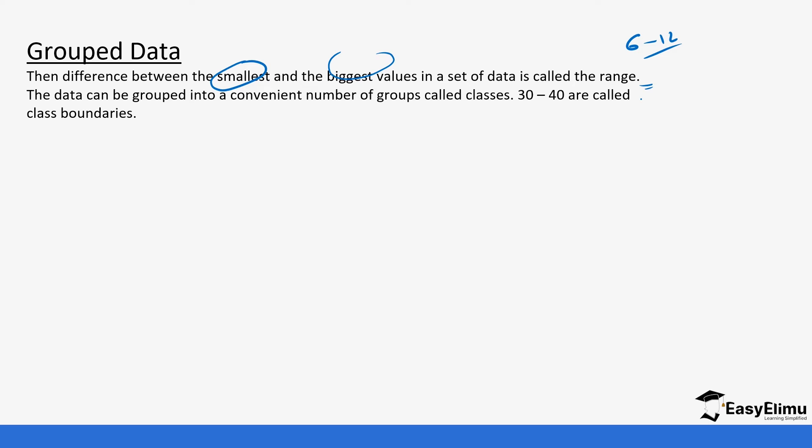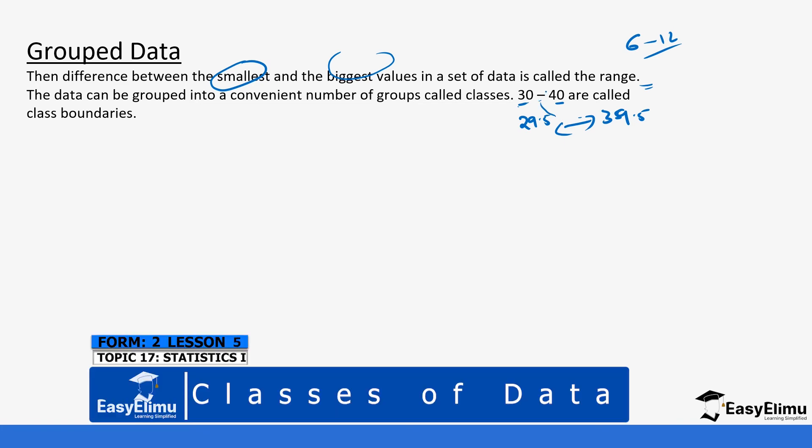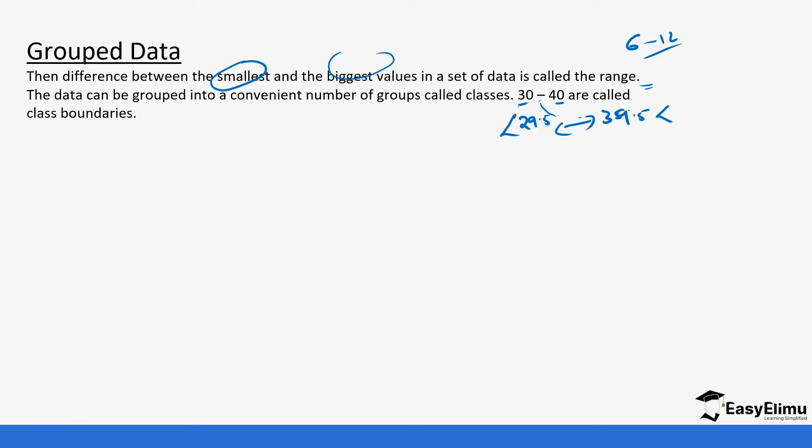When we get the specific classes, let's say we want to get ones that have a difference of 4 or 5, then we are able to get specific classes usually called the class boundaries. Like between 30 and 40, 30 and 40 are class boundaries. The actual boundaries is the values between 29.5 and 39.5. The values in between here are the ones that fall into this class. So 29.5 and 39.5 are usually referred to as the limits.